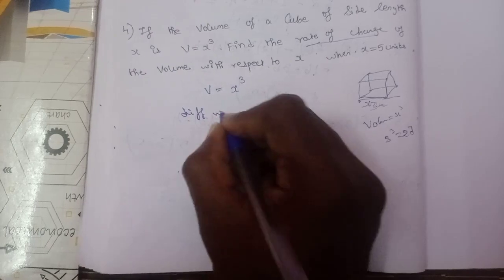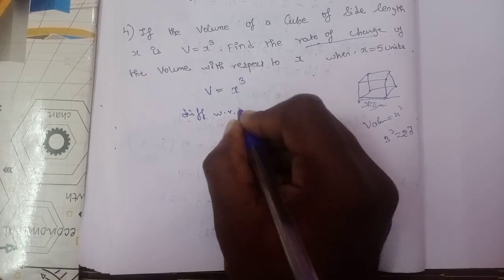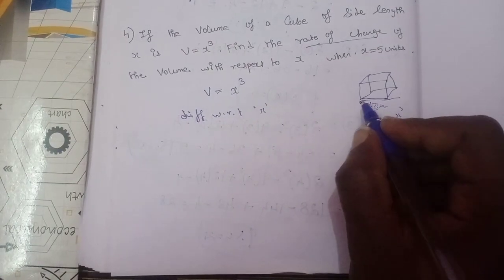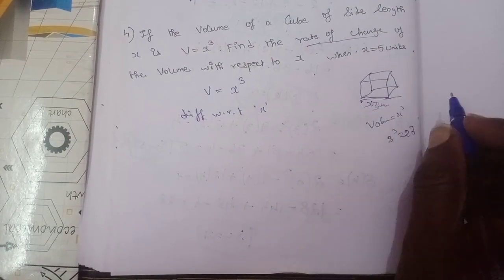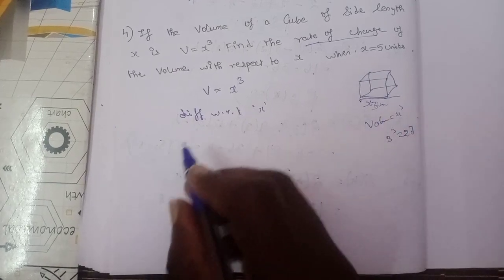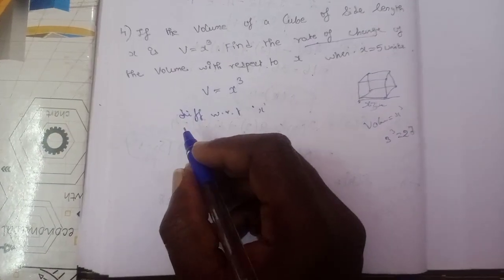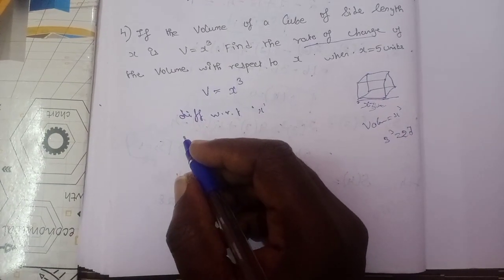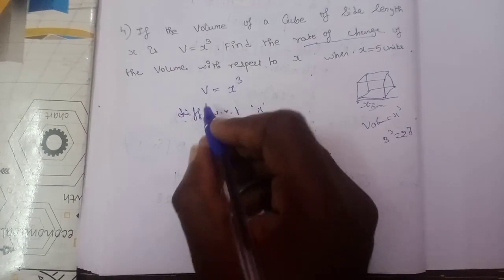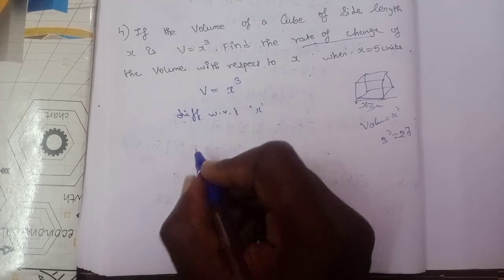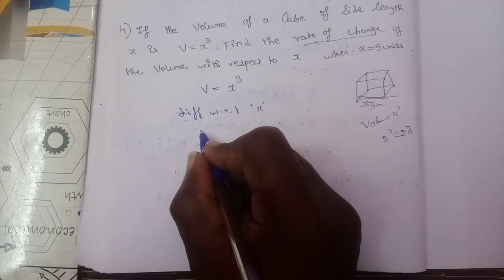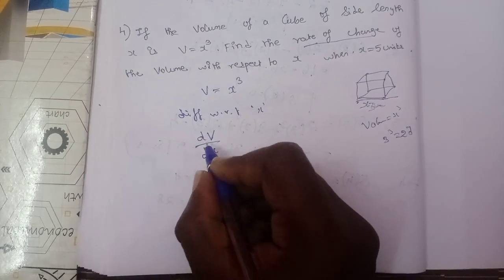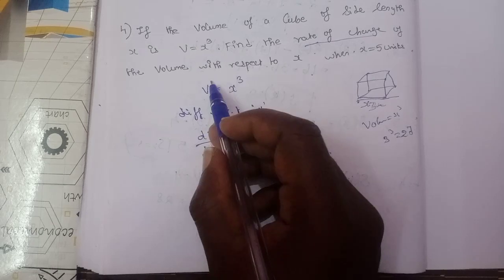Differentiating with respect to x. Here x is the side of the cube. We find dV/dx, where V is the volume equal to x³.